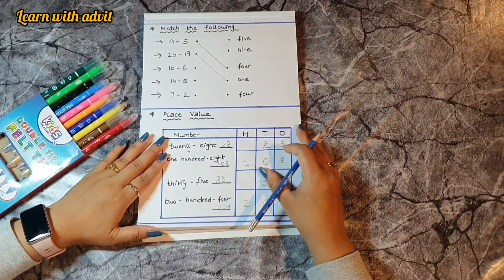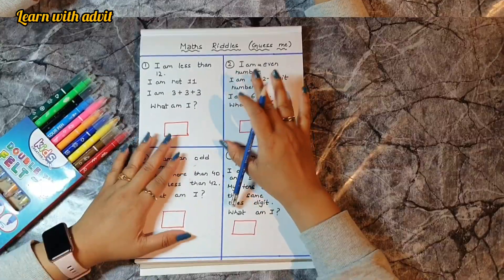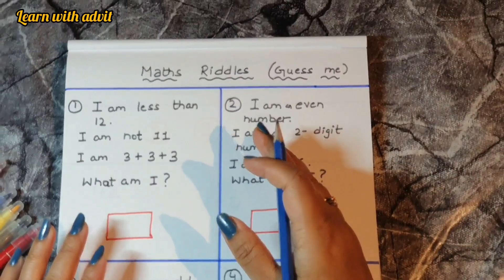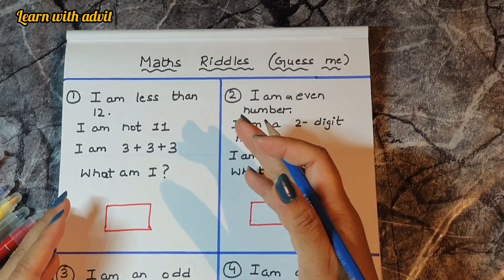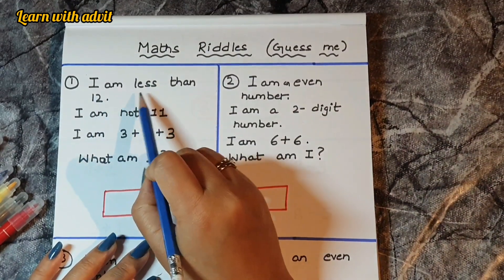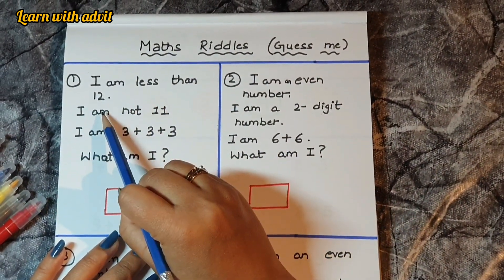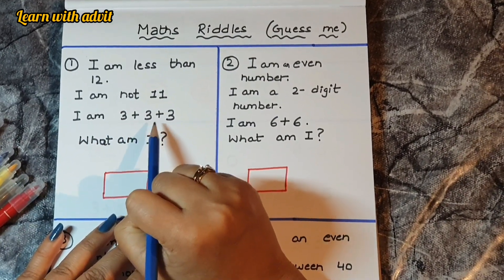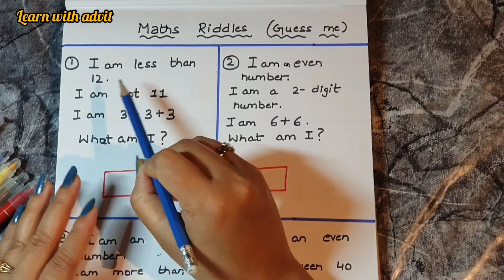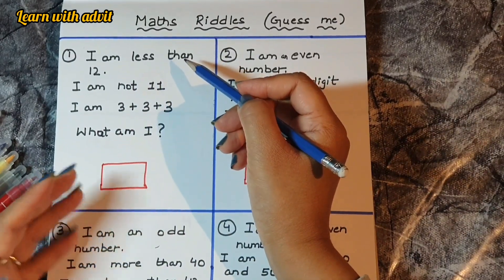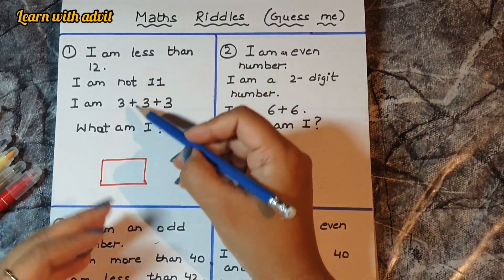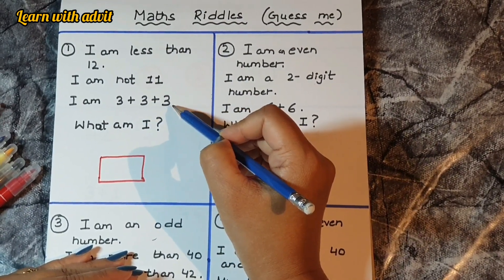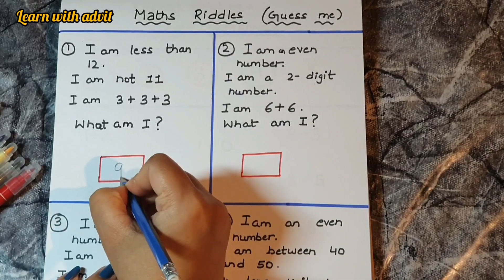This worksheet is for the math reader — 'Guess Me.' There are clues kids need to read carefully. For example: I am less than 12, I am not 11, I am 3 plus 3 plus 3 plus 3. Kids check: 3 plus 3 is 6, 6 plus 3 is 9, 9 plus 3 is 12 — but it must be less than 12 and not 11, so the number is 9.